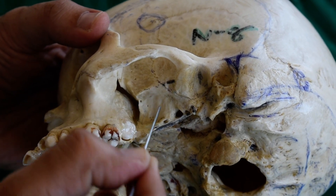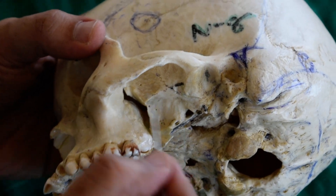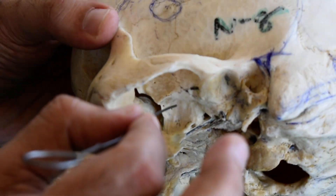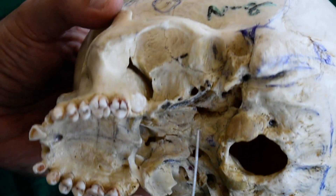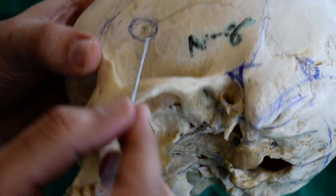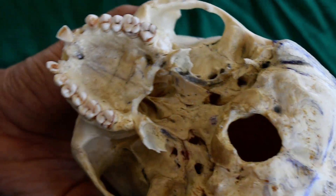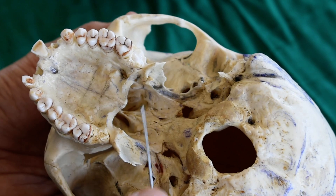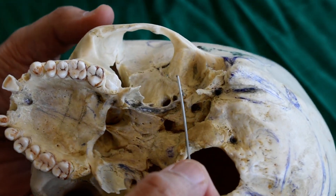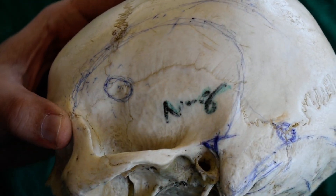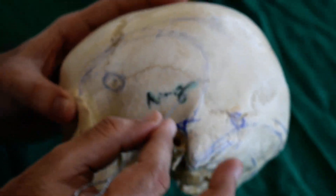Similarly, the lateral pterygoid muscle will also take origin from the infratemporal crest and infratemporal surface of the greater wing of the sphenoid. These are masticatory muscles. The muscles of mastication — lateral pterygoid, medial pterygoid, temporalis, and masseter — will be discussed in detail during norma basalis. So my dear students, this much is about norma lateralis.